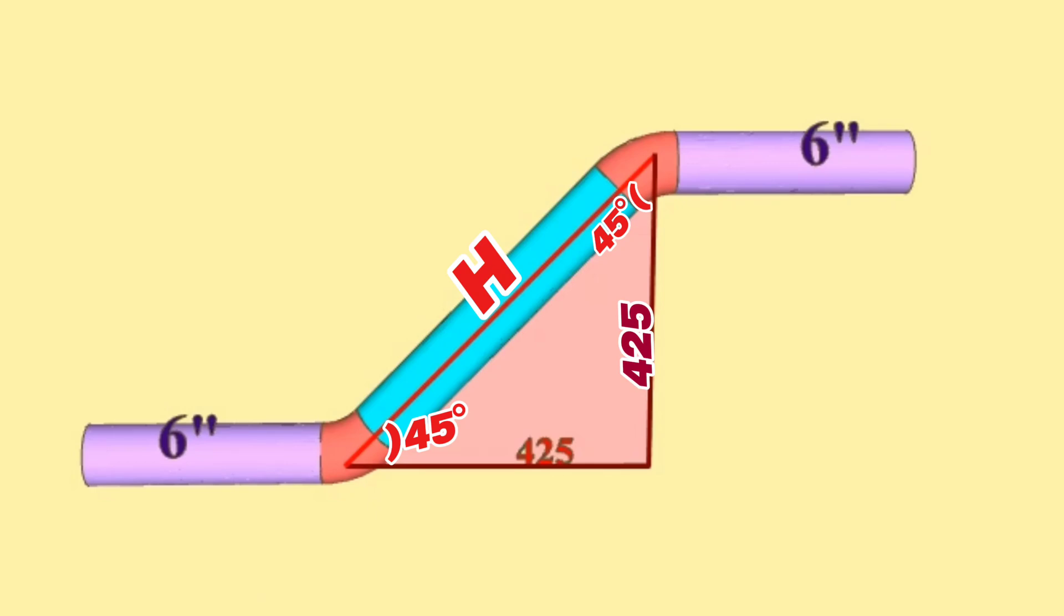We will use the Pythagorean theorem formula to calculate the hypotenuse of this right triangle. According to the Pythagorean theorem, hypotenuse H squared will equal 425 squared plus 425 squared.